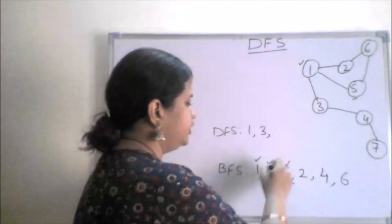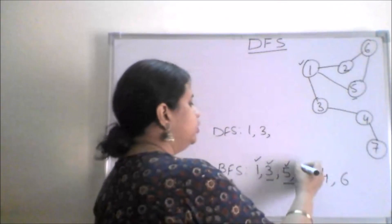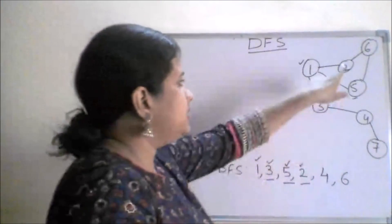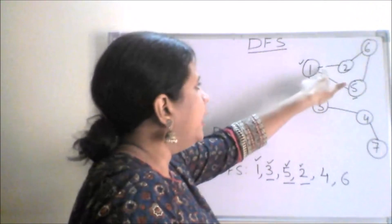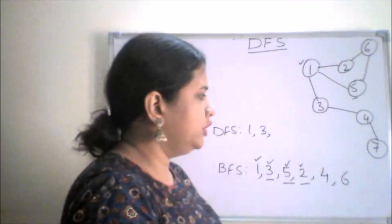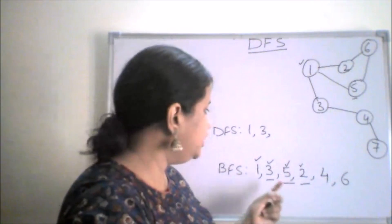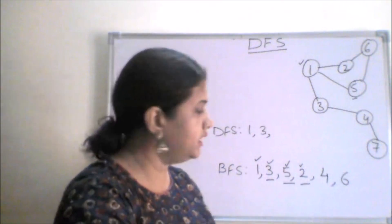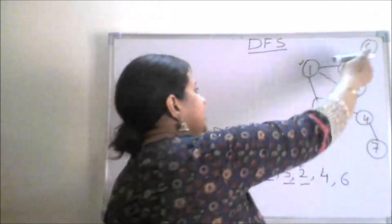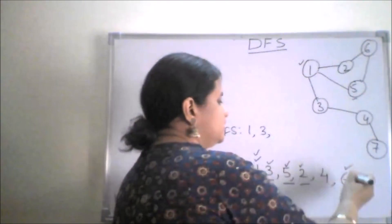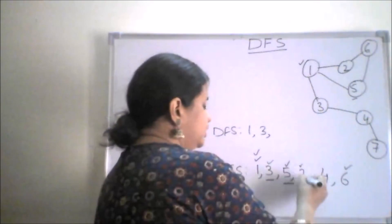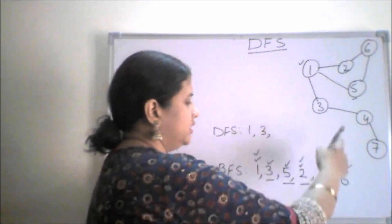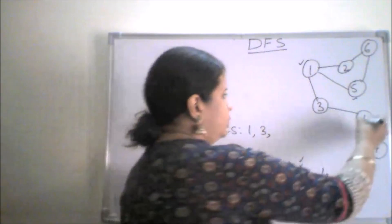Now we will go to two and look at all the adjacent nodes for two. The adjacent nodes for two are one and six. Before putting them in the queue we cross-verify — are they already in the list? One and six are already there, so we do nothing. Two is also completely explored.